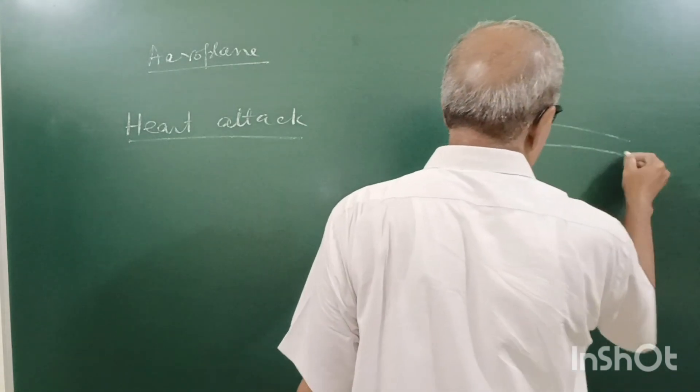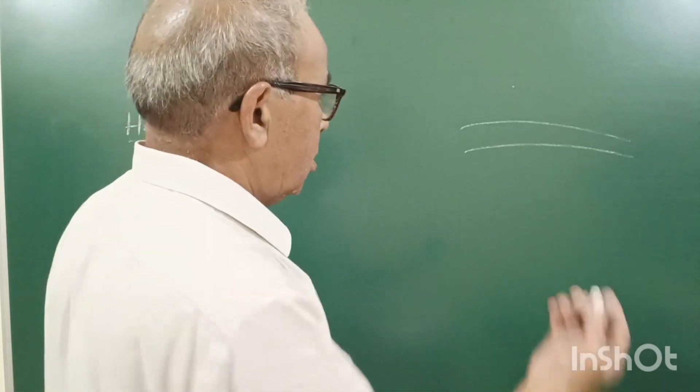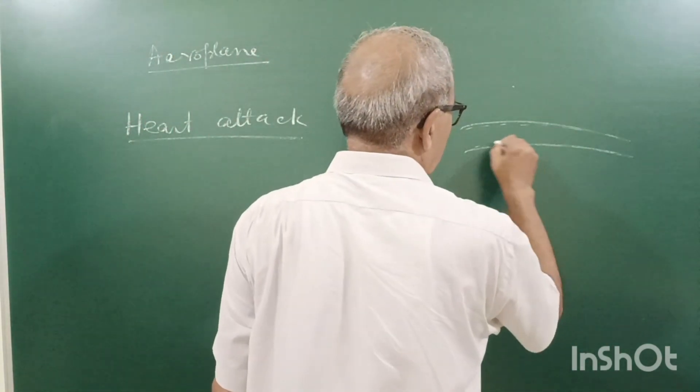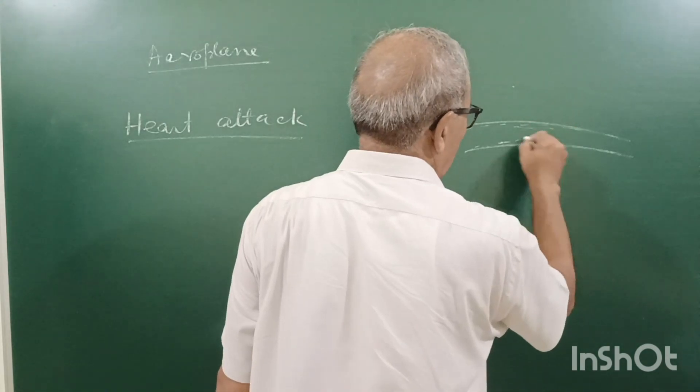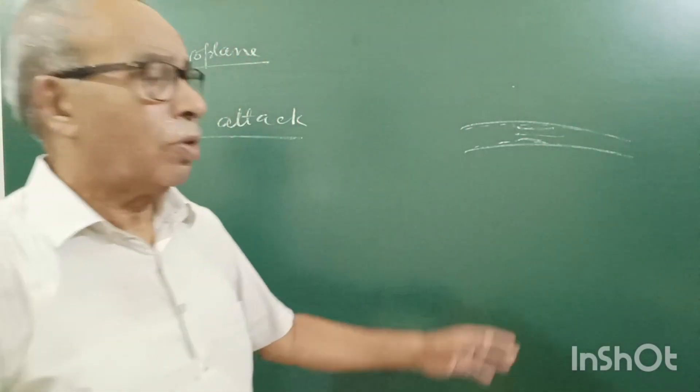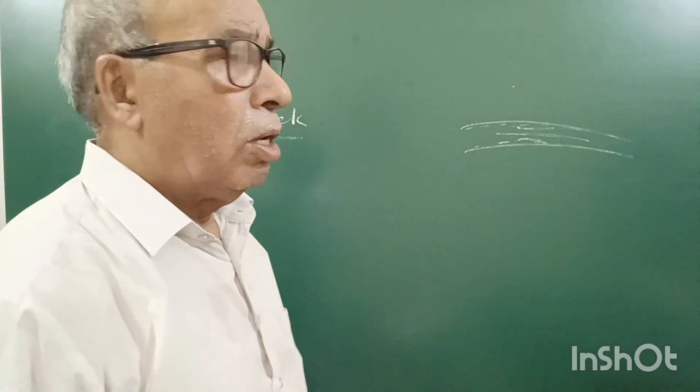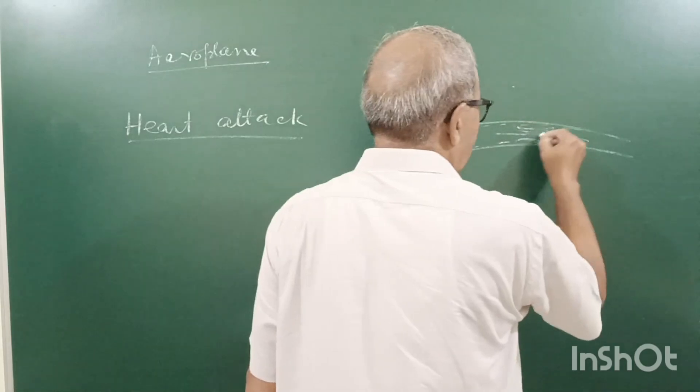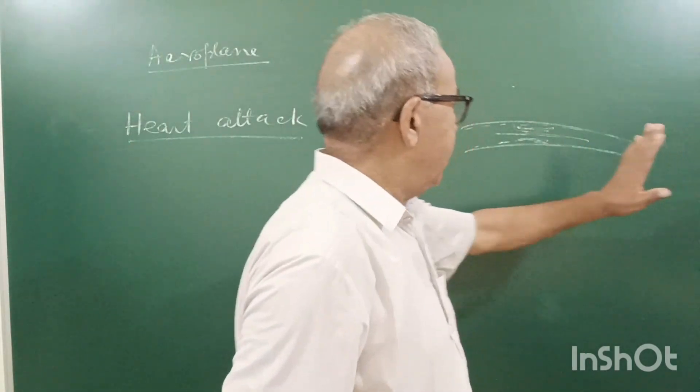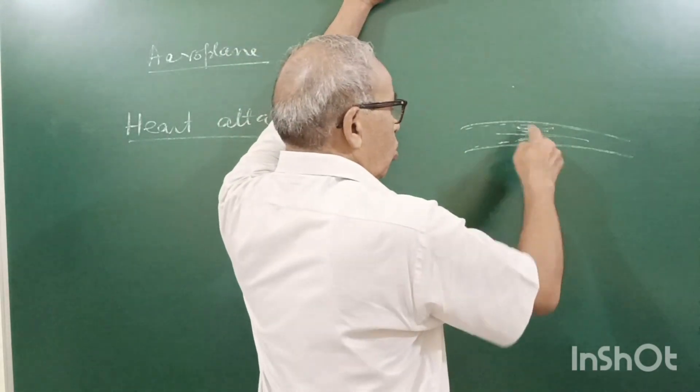Actually, this is the part of our veins. Our blood vessels, due to cholesterol deposition, somewhere it narrows down. So, here it is narrow. Blood flows very fast here. Now, if it becomes more narrow, pressure becomes low here.